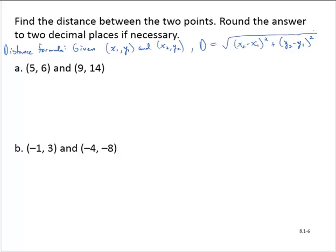In exercise A, we're given the points (5, 6) and (9, 14). So then the distance formula D would be given by the square root of (9 minus 5)² plus (14 minus 6)².